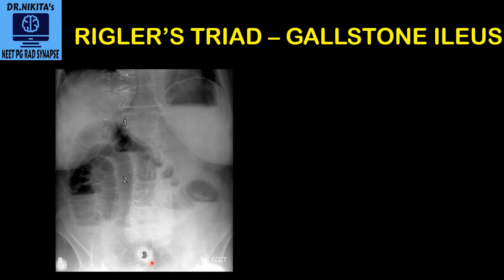If you see the three labeled here, you see something white — that is a gallstone. Basically, a stone which was in the gallbladder has now come into the bowel and got stuck here. The most common site is in the right iliac fossa, the ileum or the ileocecal junction, because it is the narrowest part. You see this round white thing — that is the gallstone.